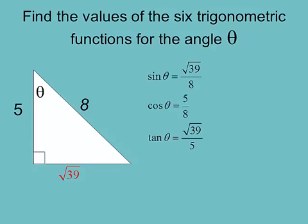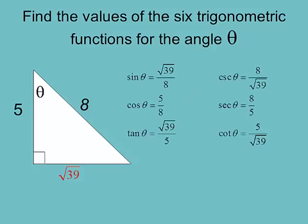Next, we find the reciprocal functions — cosecant, secant, and cotangent — which are just the reciprocals of sine, cosine, and tangent. We'll go ahead and leave those radicals in the denominator since we don't need to rationalize unless it would simplify the fraction. There's not much to do with square root of 39.